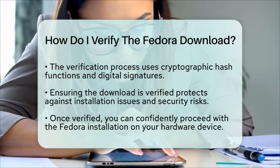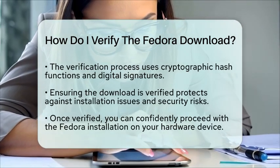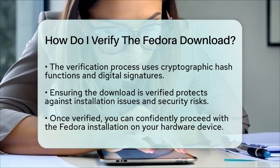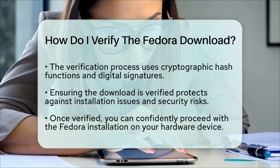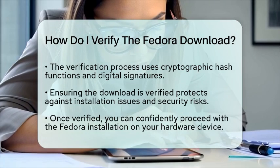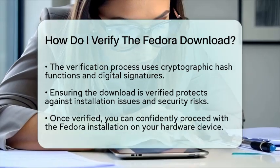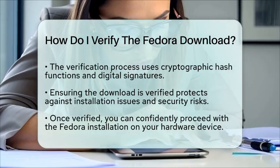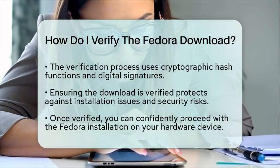It protects you from potential issues like failed installations or security breaches that could arise from using compromised software. In summary, verifying your Fedora download involves downloading both the ISO and checksum files, importing the GPG keys, validating the checksum file's signature, and confirming that the ISO's checksum matches the verified checksum. Once you complete these steps, you can confidently proceed with installing Fedora on your device.